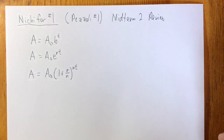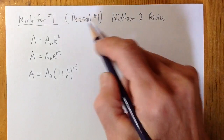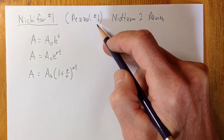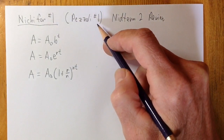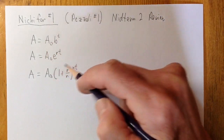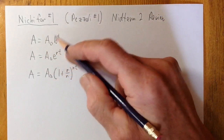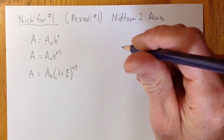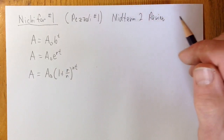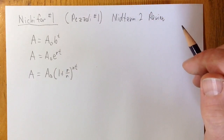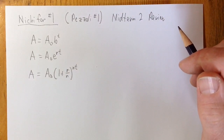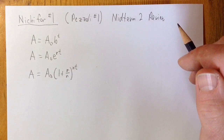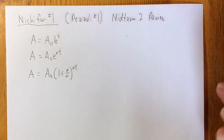Let's go over Nicophora number one about bacteria growing. It's very similar to Pozzoli number one, just about populations growing. There are a couple of ways to do these which can get confusing — which formula do you use? Hopefully I can explain how that works so it's not so confusing, and I'll try to show the work a little more clearly.